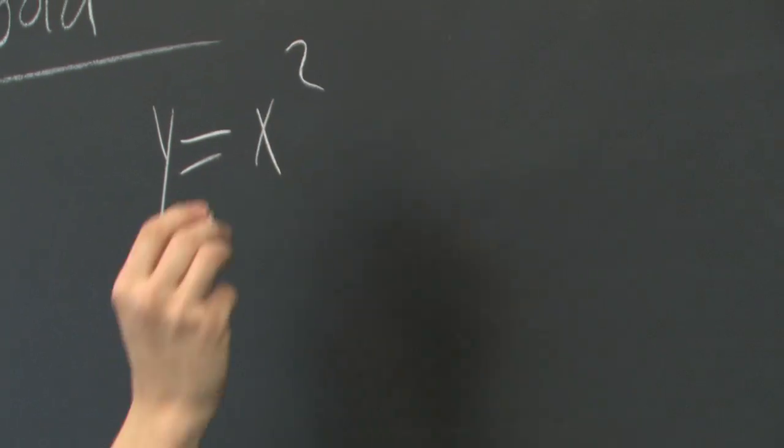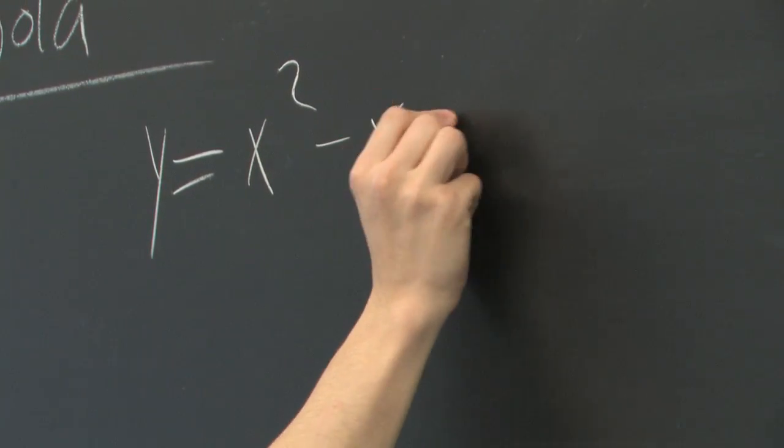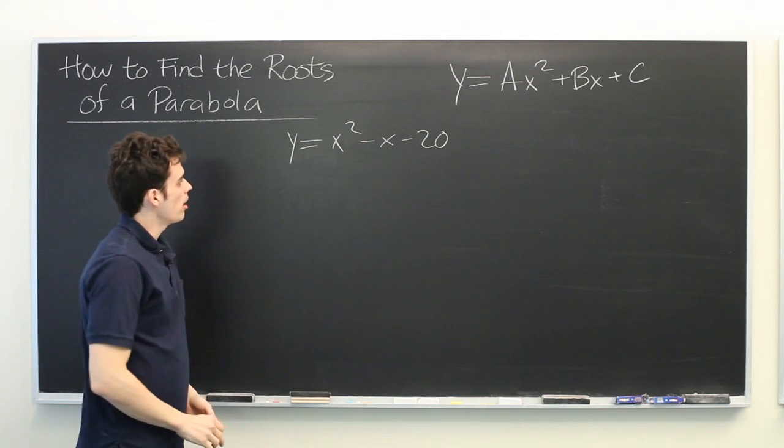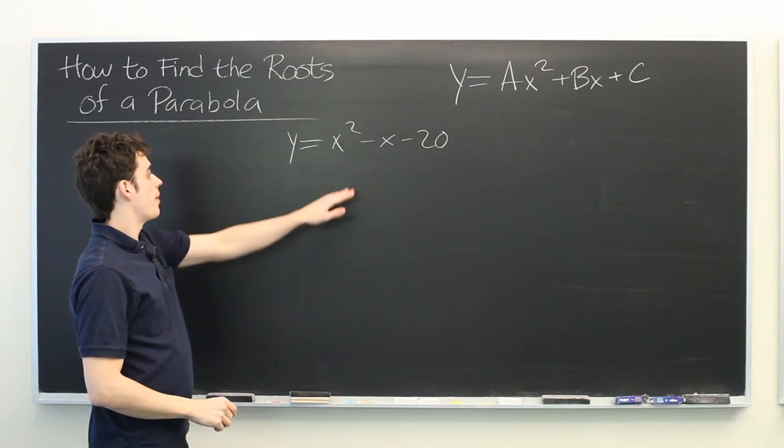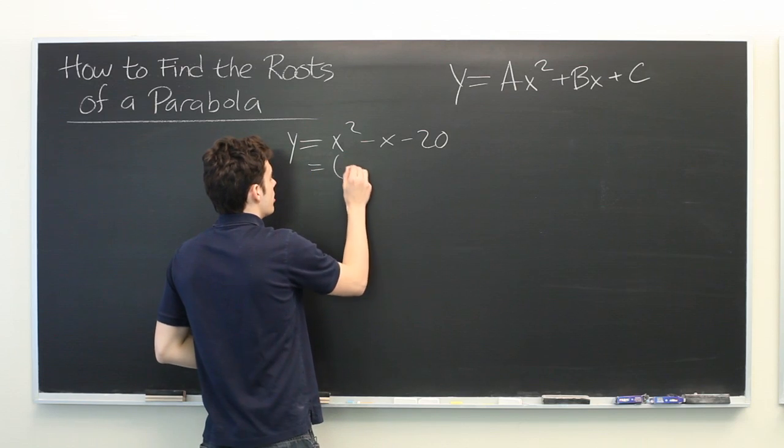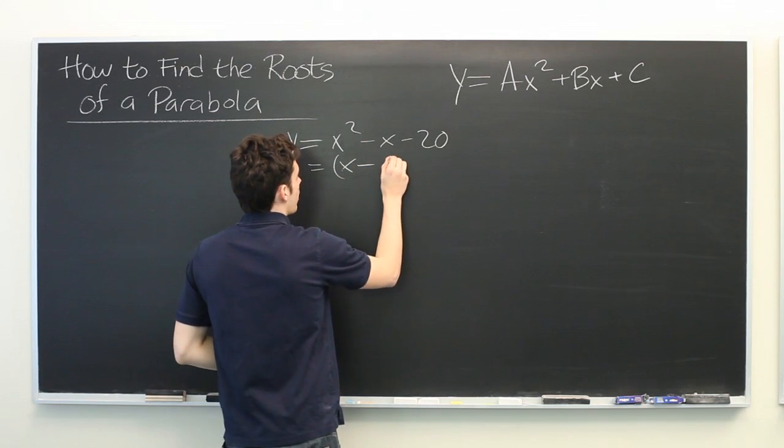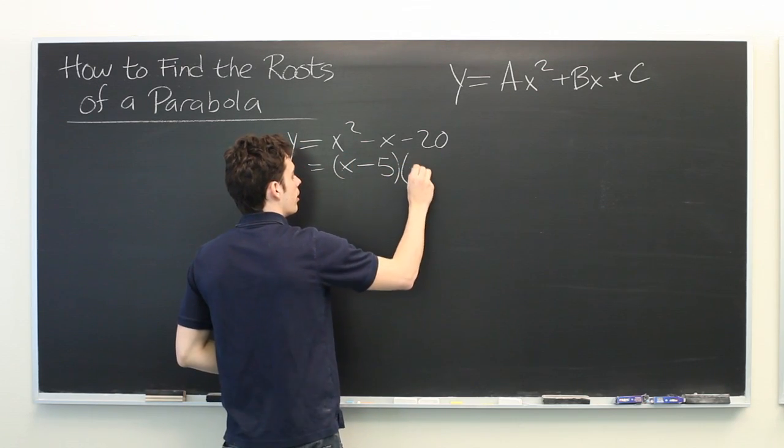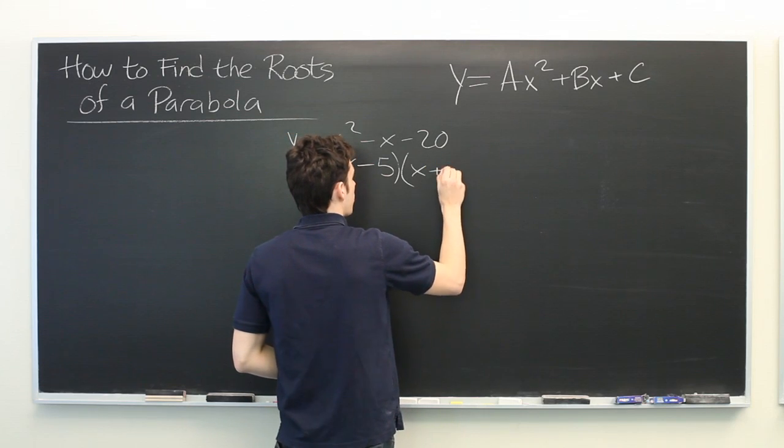y equals x squared minus x minus 20. In this case, it helps to notice that this is factorable. We can rewrite it as x minus 5 times x plus 4.